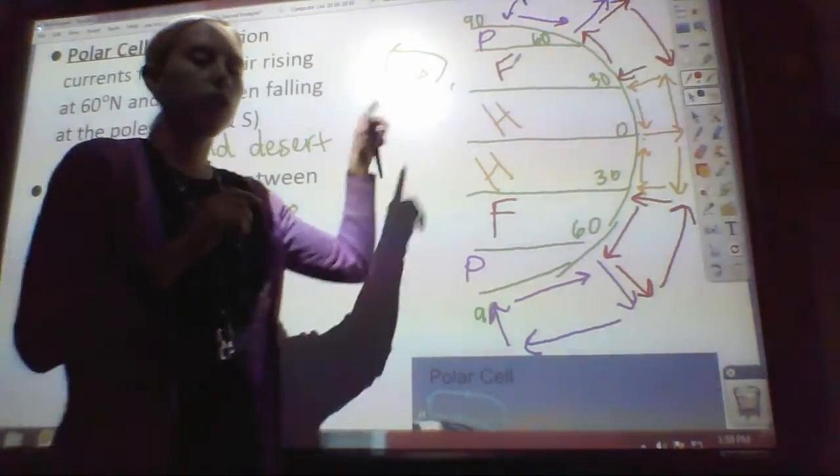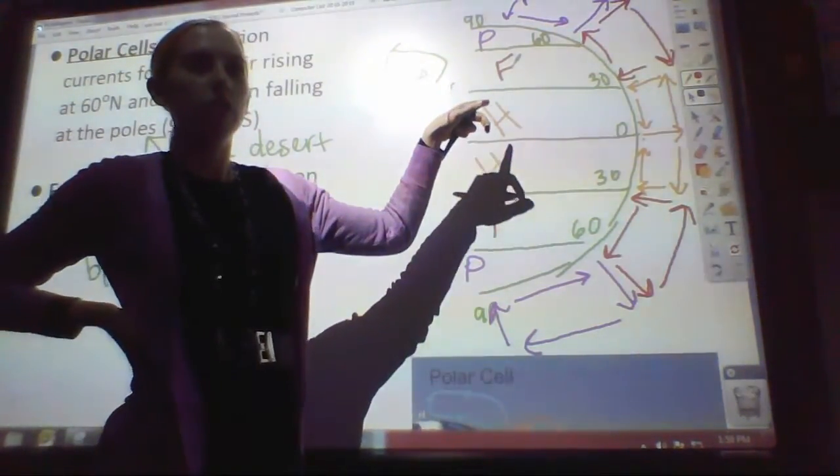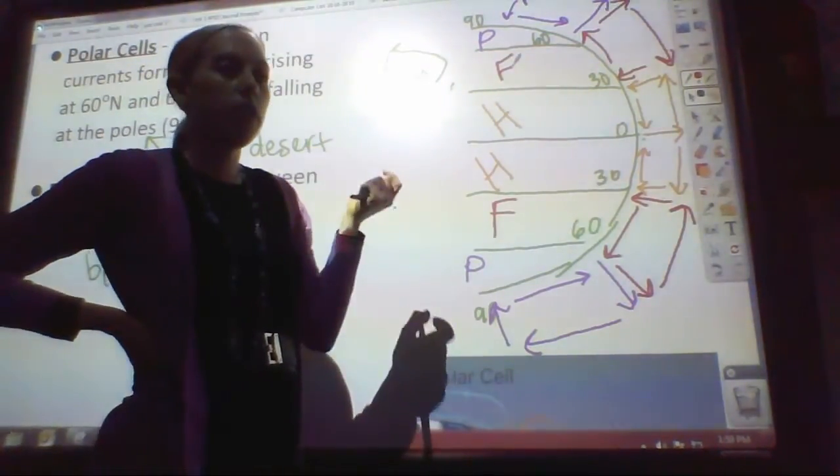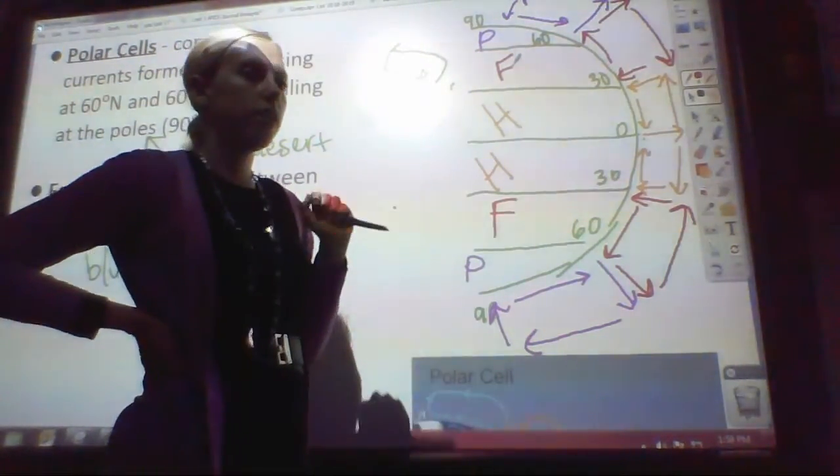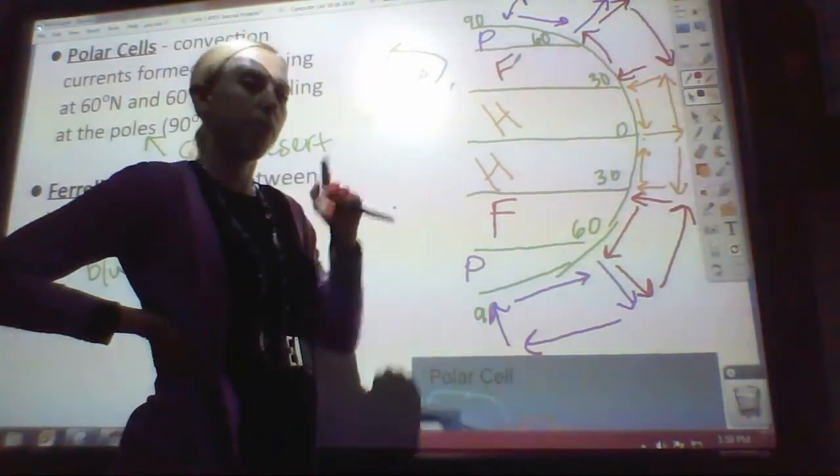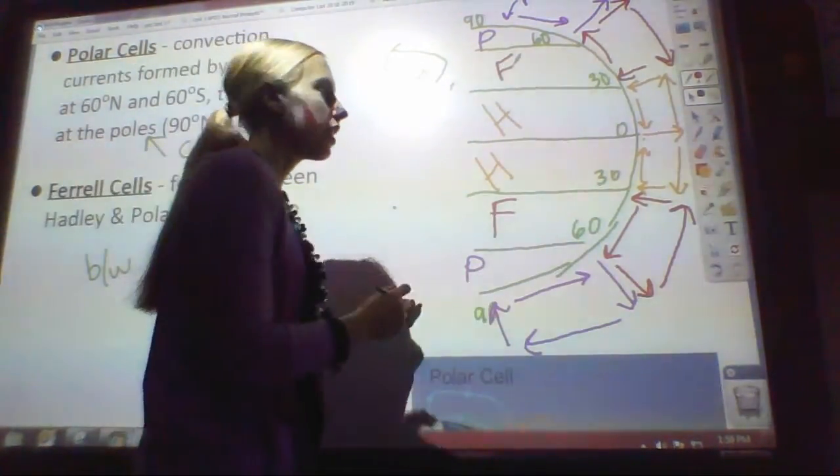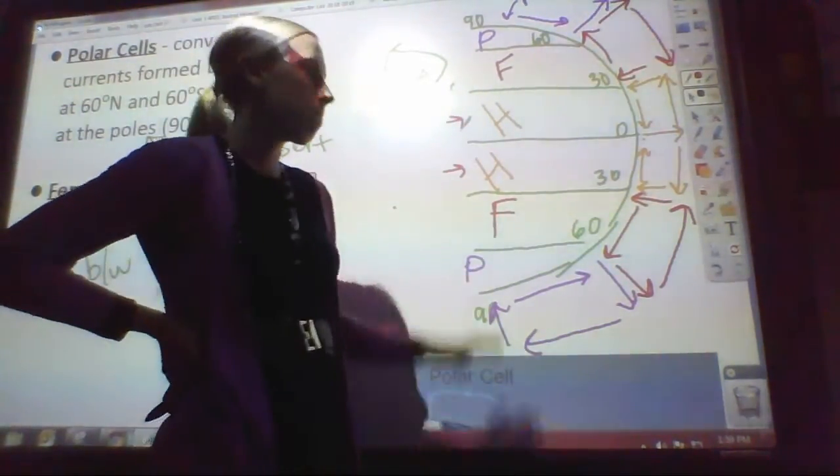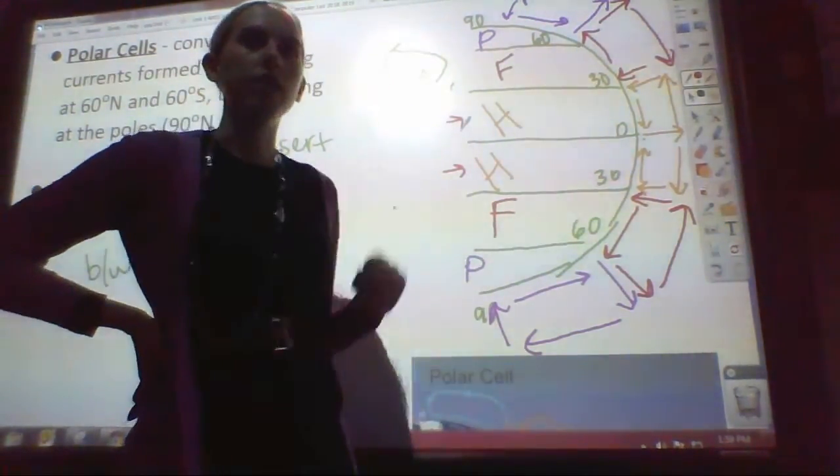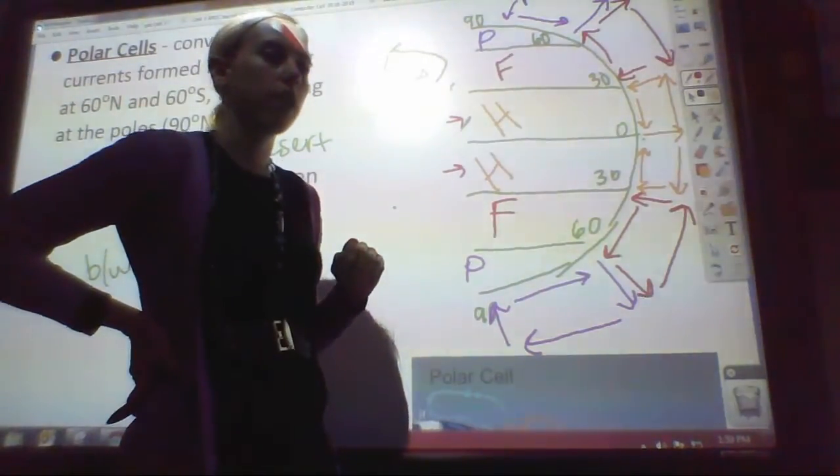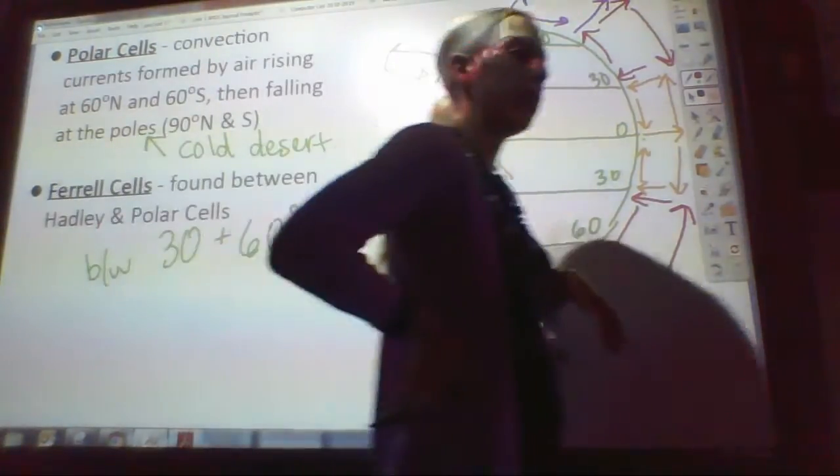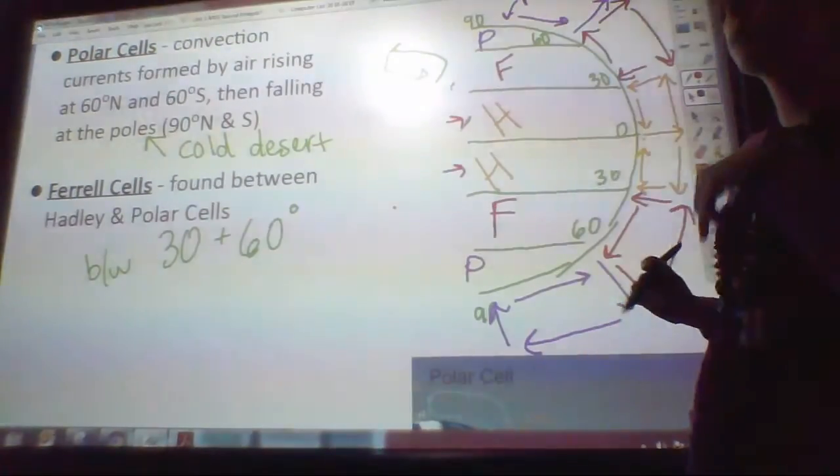But when you're studying, you can practice drawing these. Practice drawing them. Quiz yourself, can you draw them? Do you know where the deserts are and why they happen? What happens to the air? So the Hadley cells are the most important to know. And then the Ferrell and polar cells are after that. These determine why we have deserts and rainforests in particular areas. So the last thing I want to talk about is the rain shadow effect.